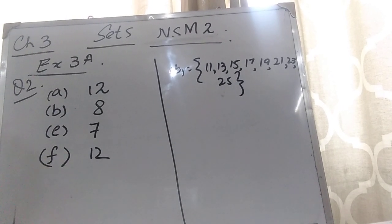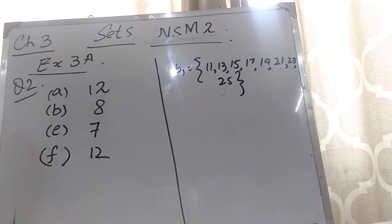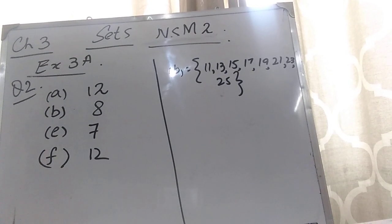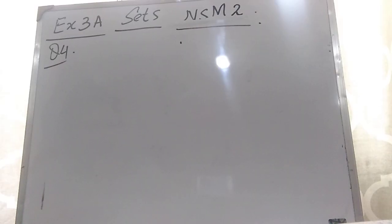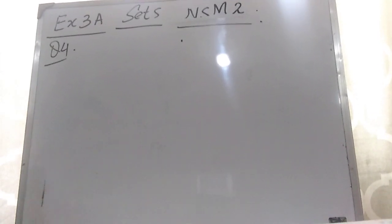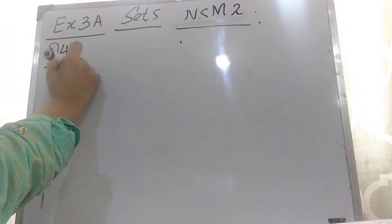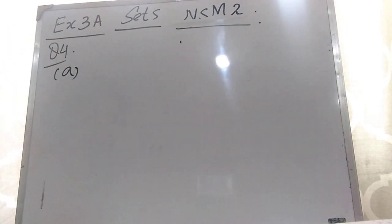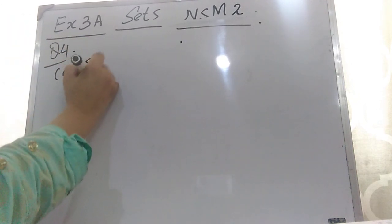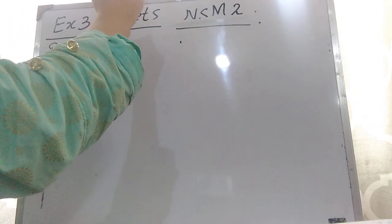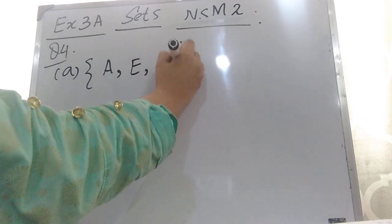Now let's come to question number 4: list the elements of the following sets. Basically the sets are given in descriptive form and you have to write them in set notation. Part A: vowels in the word 'mathematics'. The vowels are A, E, I, O, U. In the word 'mathematics' the vowels present are A, E, and I.